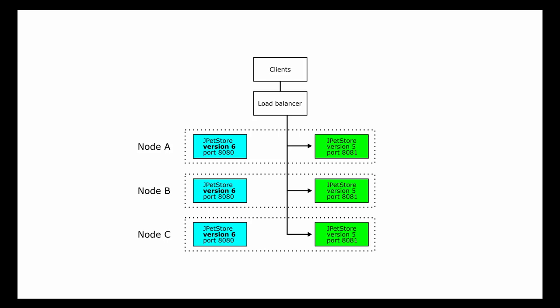If there are any problems, I can roll back or fix the new version without causing any interruption. If the new version on the blue port looks good, I'm ready to let my customers start using it. I'll start by switching one node to the new version as a canary node, just to make sure everything works before I send all my customers to the new version. If anything goes wrong on the canary node, the old version is still running on the other port, so all I have to do is flip the load balancer back. When I'm confident the new version is running well, I update the load balancer to point to the new version on all nodes, while still having the option to switch back. Now I'm ready to repeat the process by deploying a new version on the now inactive green environment.